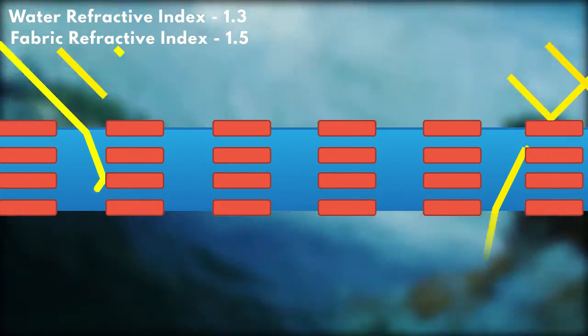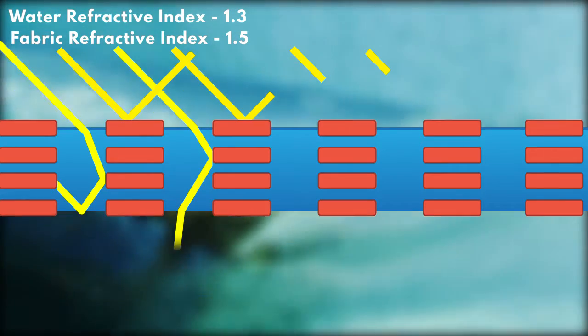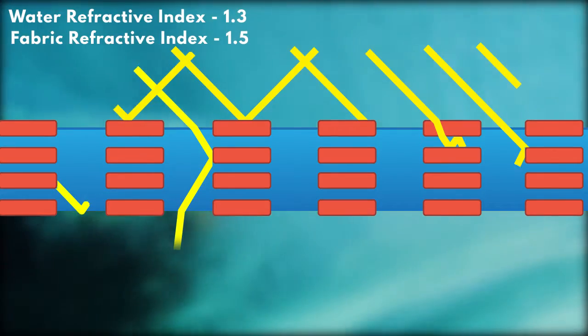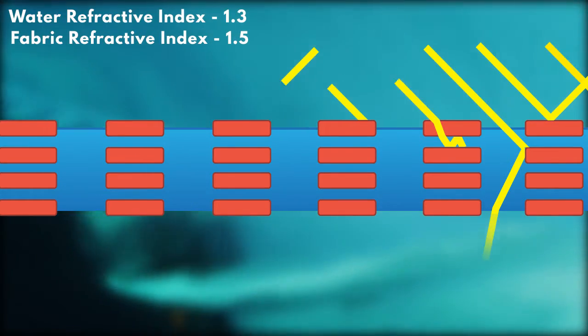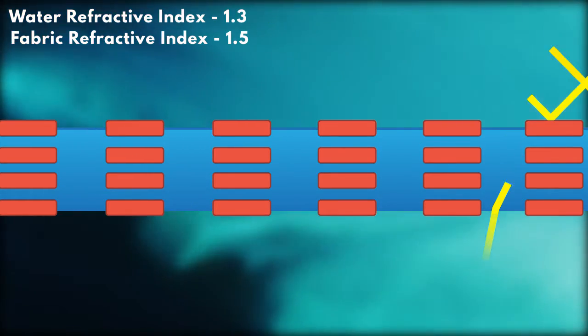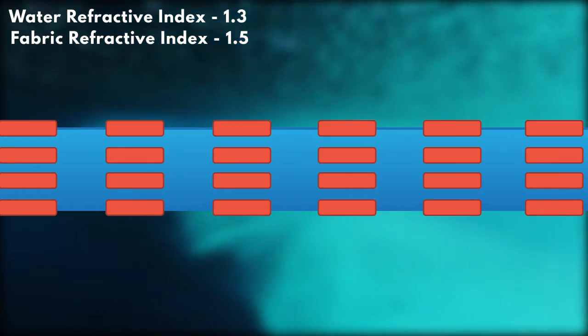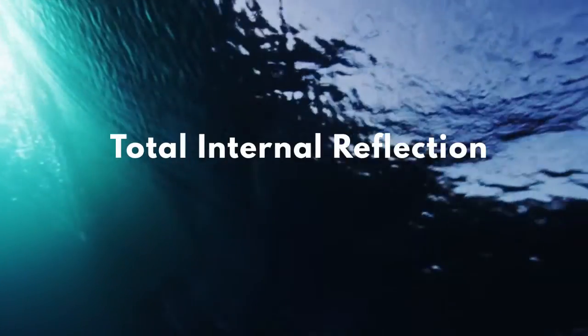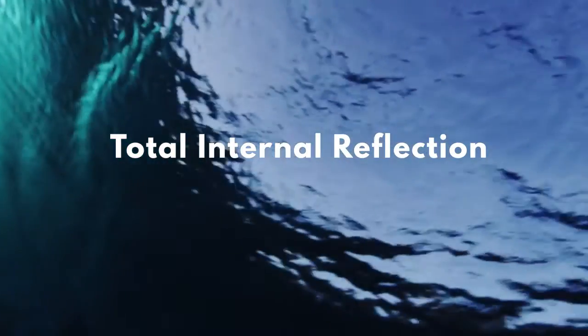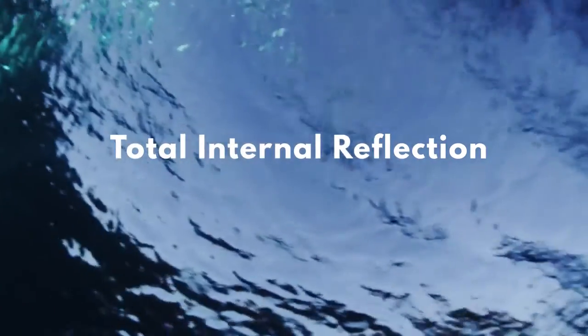Instead, more of the light will either be simply transmitted through the fabric, or it will bounce around in the fabric or water layer due to a process called total internal reflection and eventually be absorbed. The net effect is that the material will appear darker.